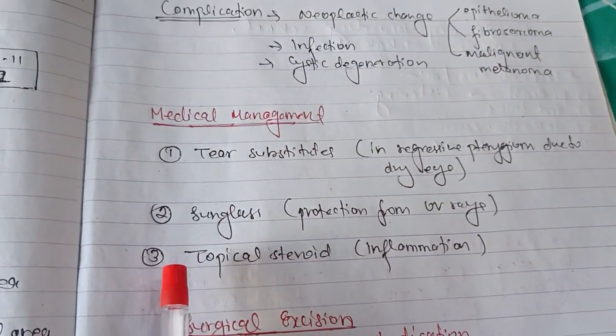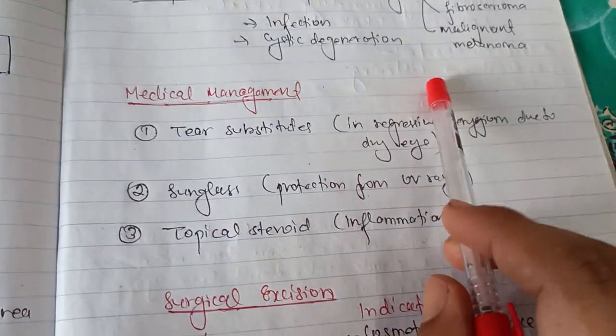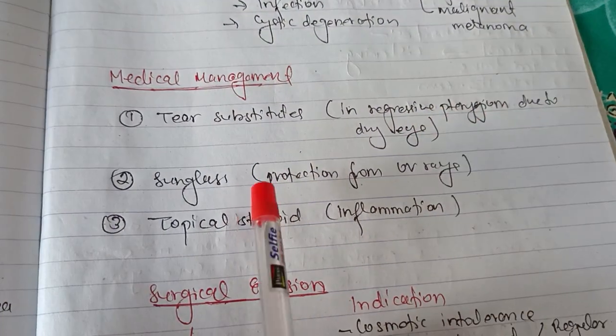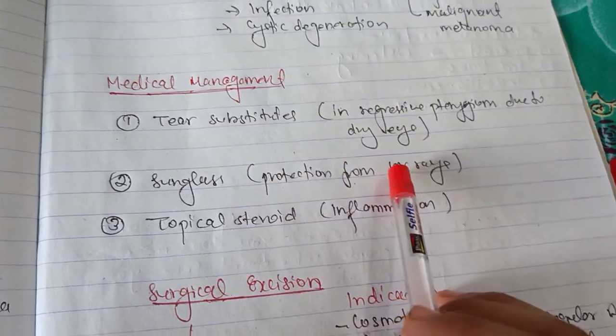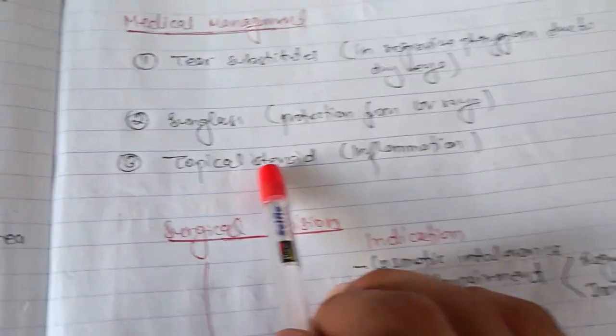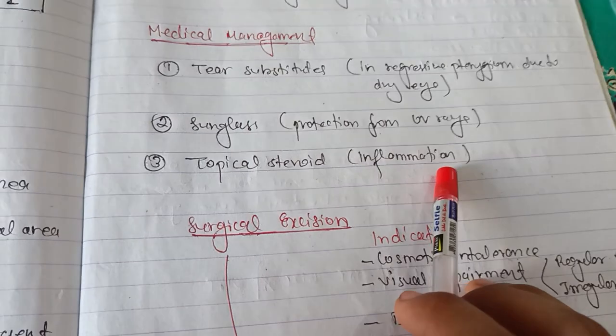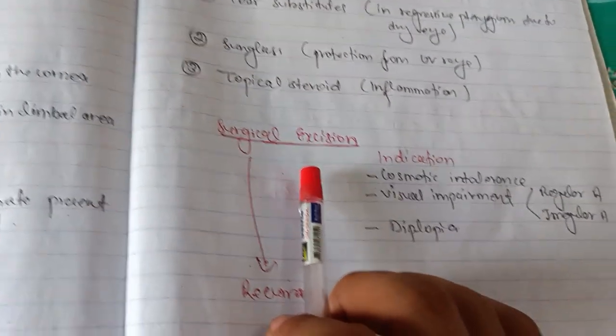Talking about medical management, there are three options: we give tear substitutes mainly in regressive pterygium due to dry eye, we prescribe sunglasses for protection from UV rays, and topical steroids are prescribed to reduce inflammation.